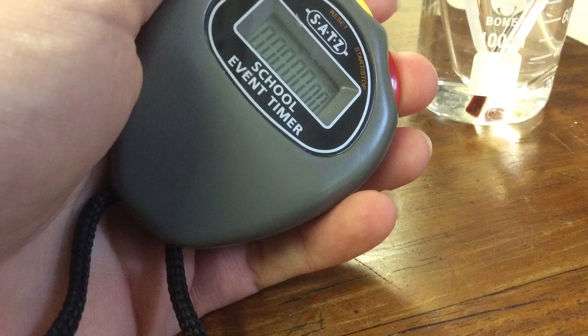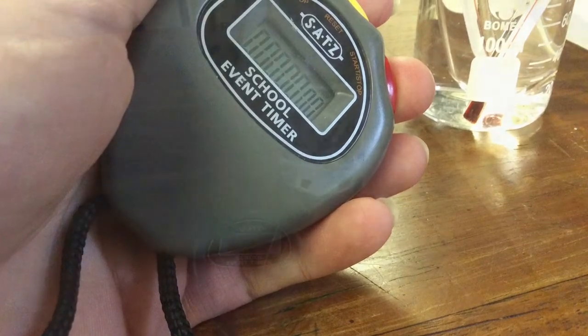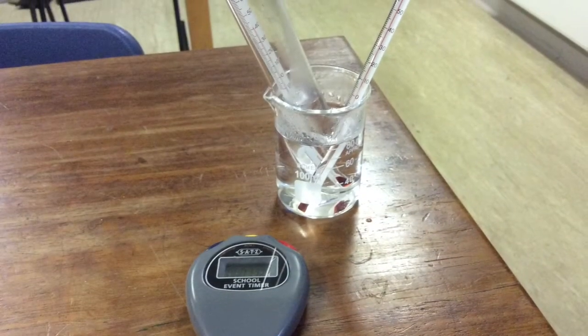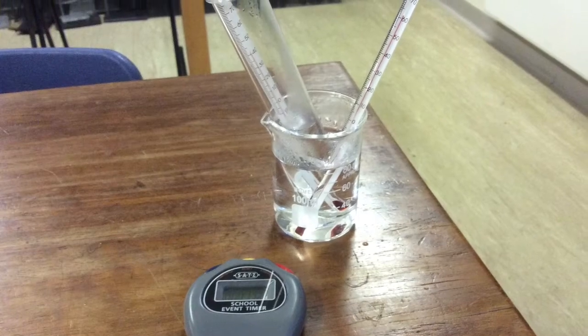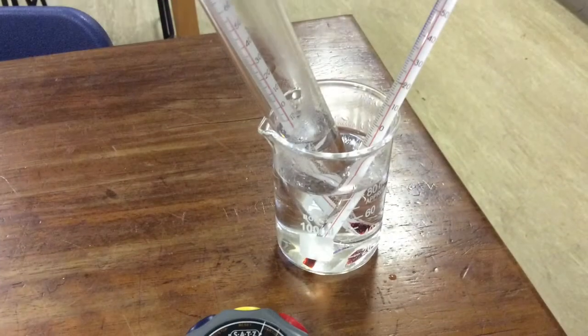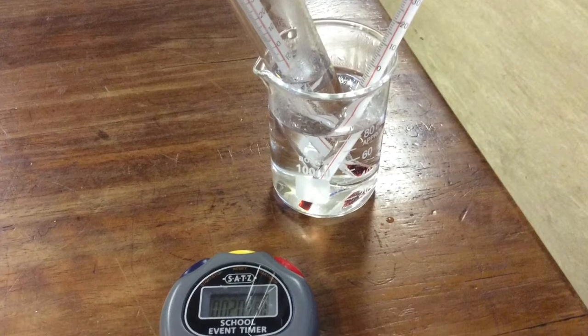Take your first set of results for zero and start the stopwatch. Do not stop the stopwatch. Use the stopwatch so you can take results every 15 or 20 seconds over the course of a few minutes.